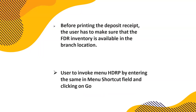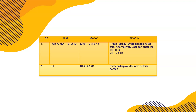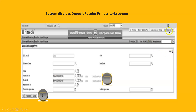Today we shall discuss how to print the term deposit receipt, what the command is for that, how to print a duplicate demand receipt if it is lost, and how to extend a term deposit. Extension is done before maturity; renewal is done on or after the date of maturity. Extension is done so customers can take advantage of any rise in the rate of interest. Before printing the deposit receipt, the user must ensure that the FDR inventory is available in the branch location.